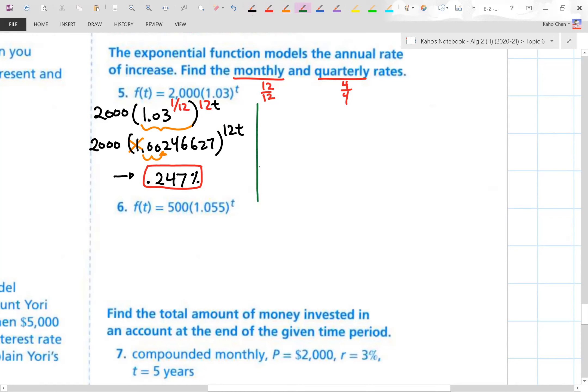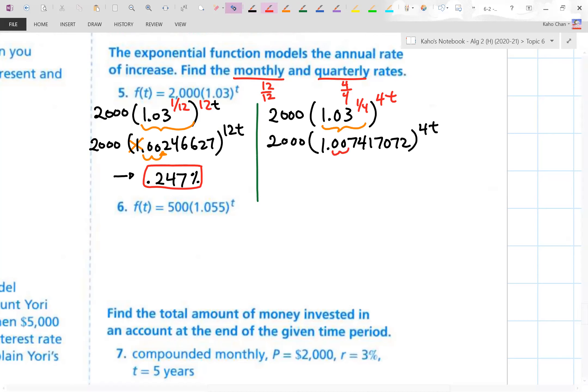Trust me on that. You'll get pretty good at this after you see me do a few more of these. Do the same exact thing, but I wanted a quarterly for this particular scenario. 1/4th to the power of 1/4th, T. This part right here comes out to this number right here. 1.007, and I did these numbers ahead of time, so you don't have to forgive me, 4 1 7 0 7 2 to the power of 4T. So ladies and gentlemen, 2 to the right. I get 0.742% for my quarterly rate.